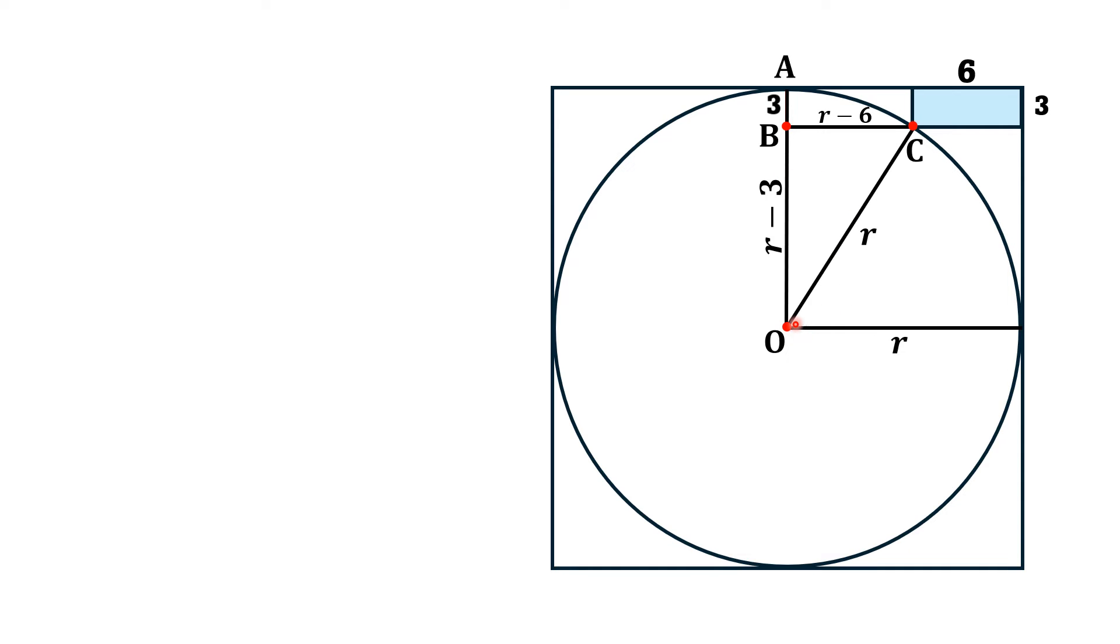The angle at point B, angle OBC, is 90 degrees. So the geometrical shape OBC is a right triangle, which is highlighted in pink.